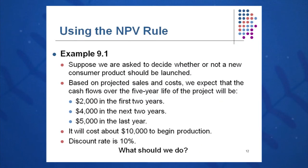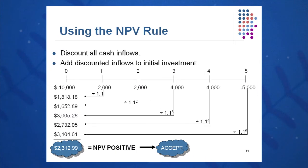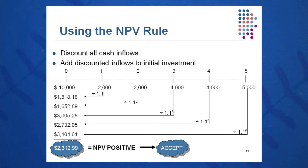Here's another example: suppose we're evaluating whether a consumer product should be launched. You get two thousand in the first few years, four thousand in the next two, and five thousand in the last year. It will cost ten thousand today to begin production, and we discount cash flows at ten percent. We draw a timeline, show the cash flows coming in, and discount them back — divided by 1.1, divided by 1.1 squared, 1.1 cubed, and so on — then compare those cash inflows with the negative ten thousand dollars of cash outflow today. We see a positive NPV of twenty-three hundred dollars, so we accept this project.